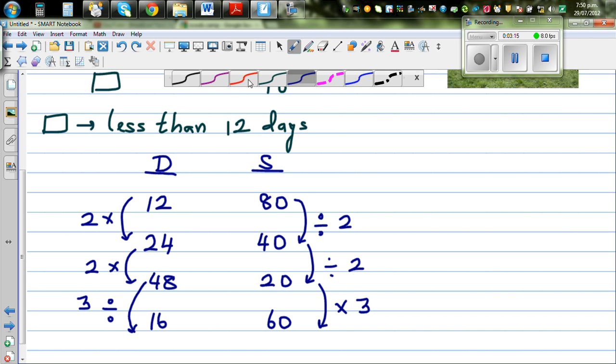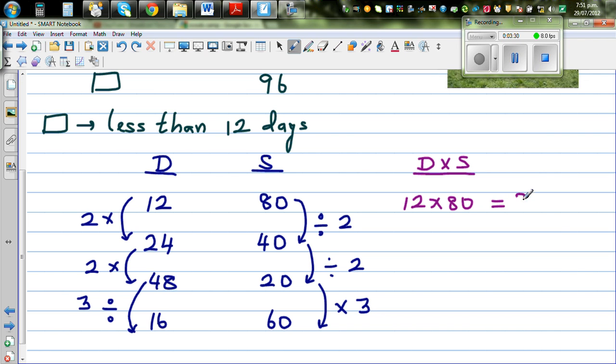Now, one interesting fact that you can see, if you see the numbers together. Let's multiply days. This quantity, number of days times number of Scouts. So can you see, this is 12 times 80. 12 times 8 is 96. This is 960.